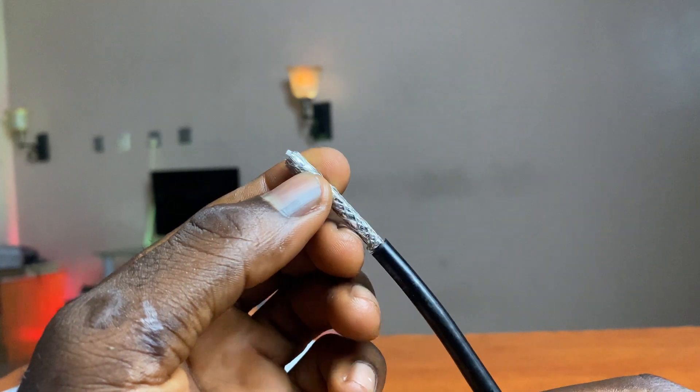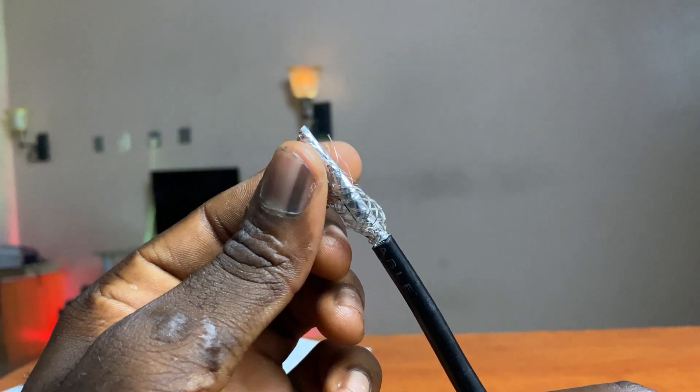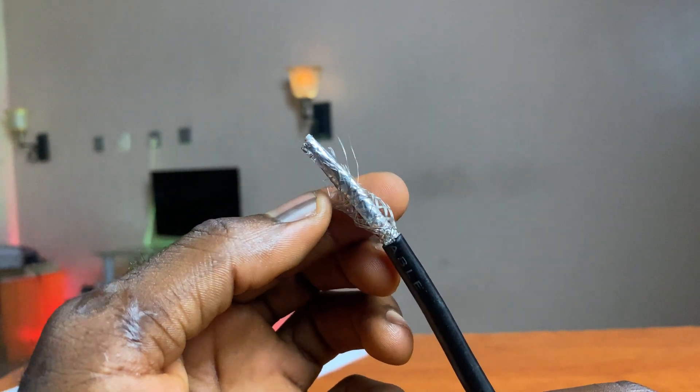Although the shield wire is theoretically supposed to protect the signal from being affected by radio frequency and electromagnetic noise, its effect is almost negligible in practice.